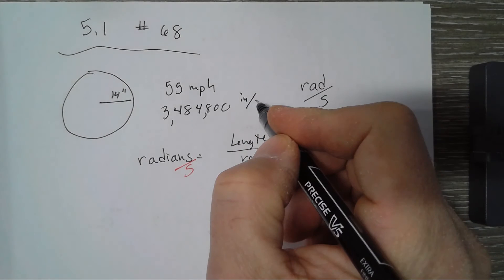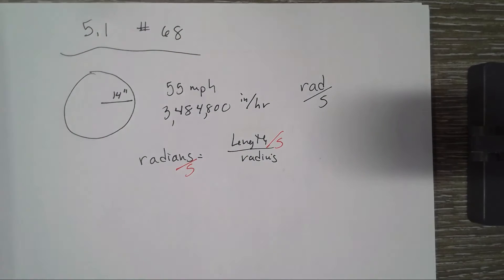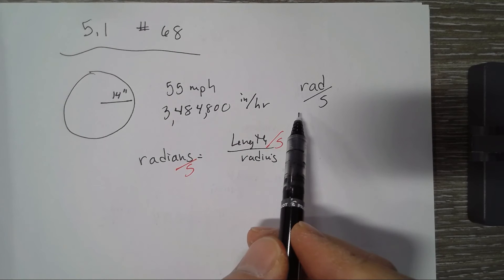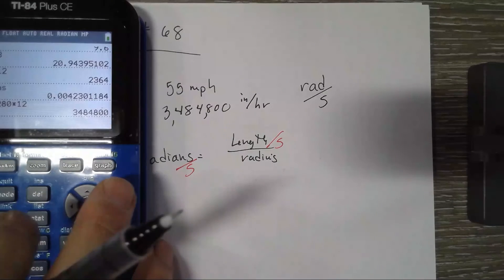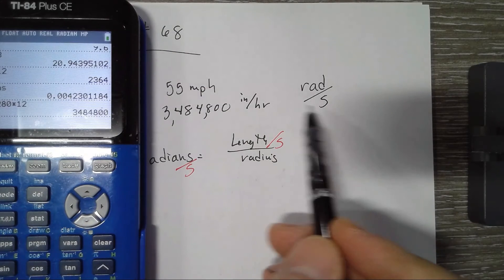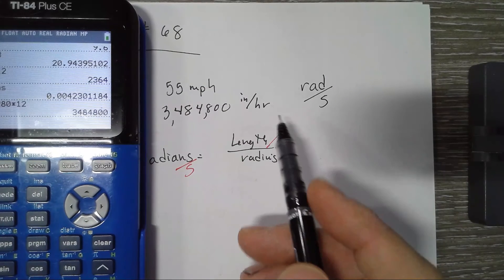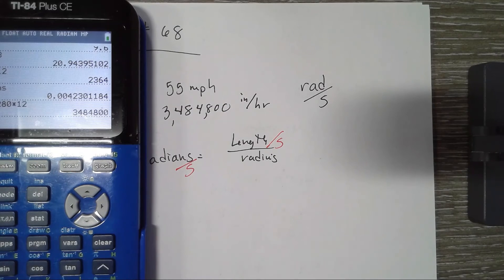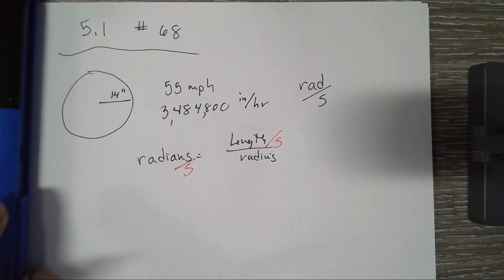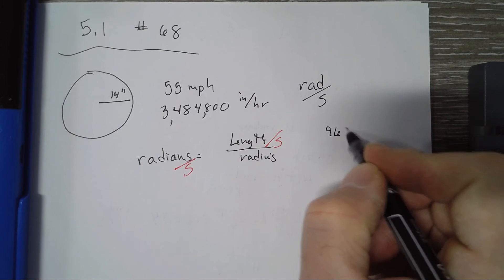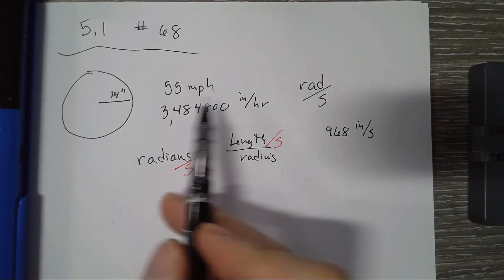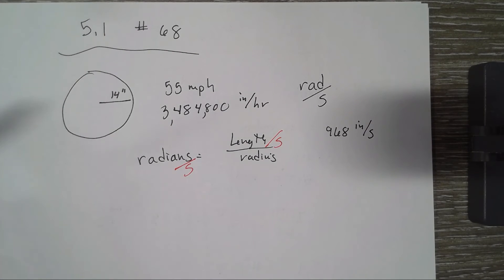All right, so we might as well convert that to inches per second. To do that, we'll go less time in seconds compared to an hour, so divide by 60, divide by 60, so we'll divide by 3,600. That gives us 968 inches per second. All right, so we converted 55 miles per hour to inches per second.